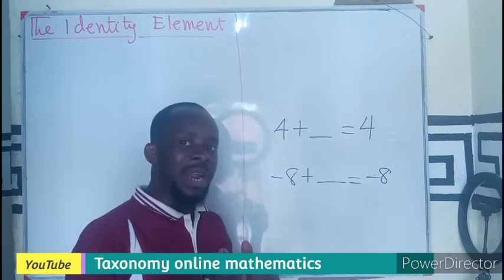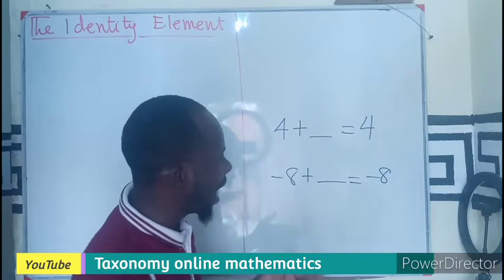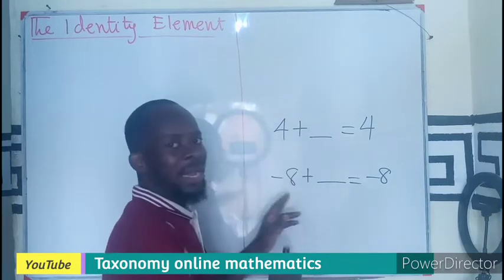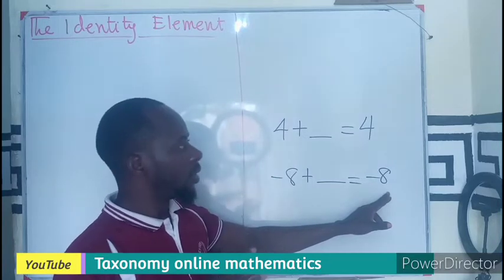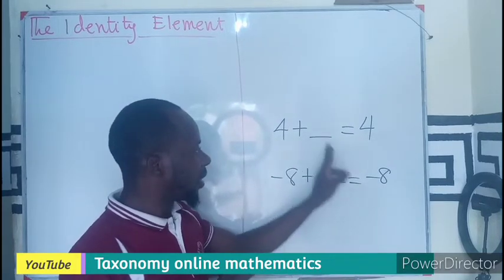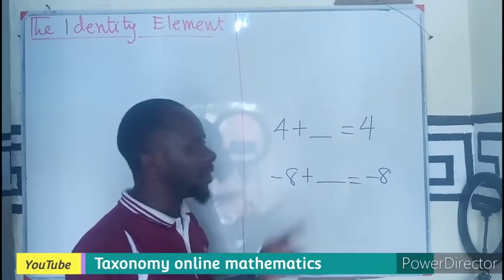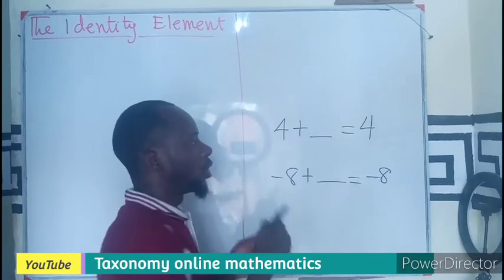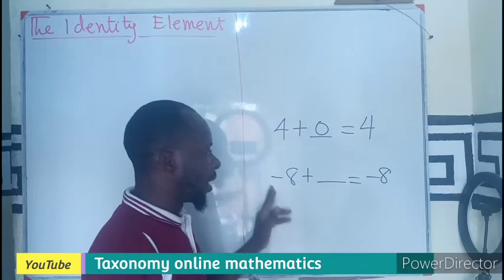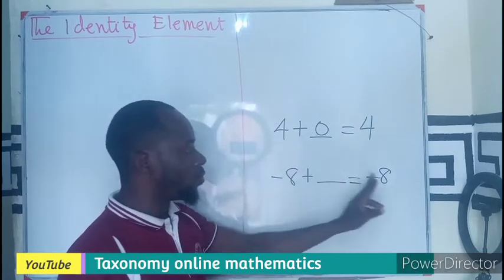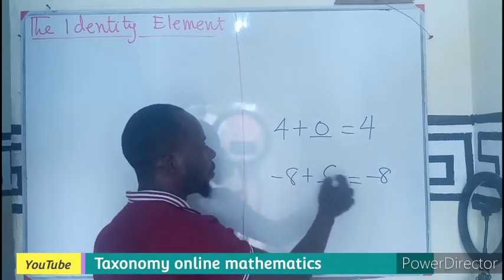I am looking for an identity element that when I add it to my number, I will still have to get the same number, no change in the result. And you can agree that here, the only number that can make this statement true is 0. Similarly, the only number that I can add to negative 8 to make it negative 8 will also be 0.